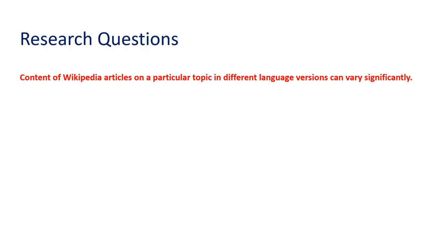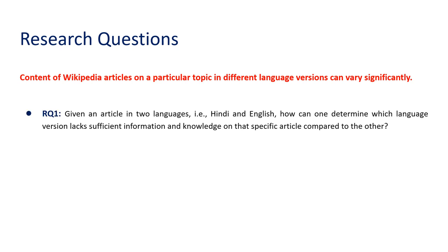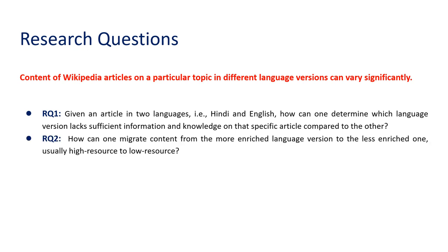In this context, we pose two immediate research questions. The first one is: given an article in two languages, let's say Hindi and English, how can one determine which language version lacks sufficient information and knowledge on that specific article compared to the other? The second question is: how can one migrate content from the more enriched language version to the less enriched one — usually high resource to low resource?